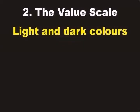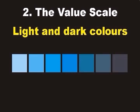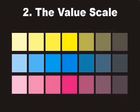Another color scale is called the value scale. This scale shows light and dark colors. By adding white to any color from the hue scale, we get light colors — we call light colors tints. By adding black to any color from the hue scale, we get dark colors — we call dark colors shades. Therefore, the value scale describes light and dark colors.